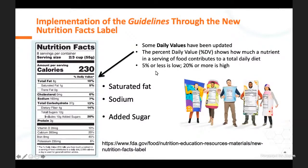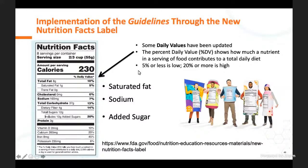Looking at the new Nutrition Facts label: some daily values have been updated. The label highlights foods of public health concern—saturated fat, sodium, and added sugar—as well as micronutrients of most public health concern. A useful rule of thumb: if a nutrient is 5% or less of daily value, it's considered low; if it's 20% or more, it's considered high. So if a food is providing 20% of your added sugars, that's quite high, and it can guide your clients in making better choices.